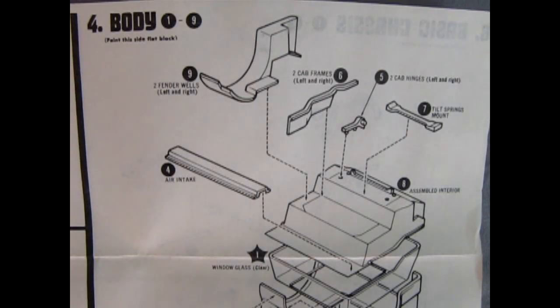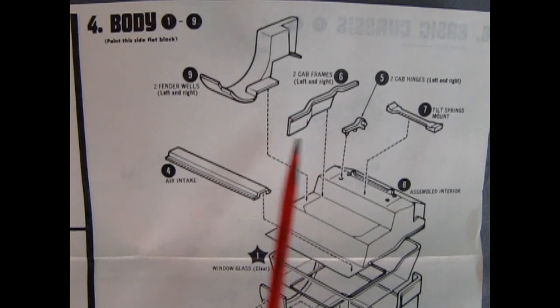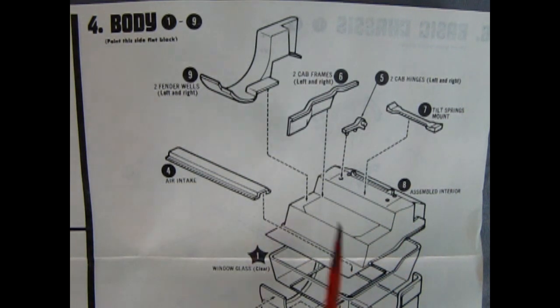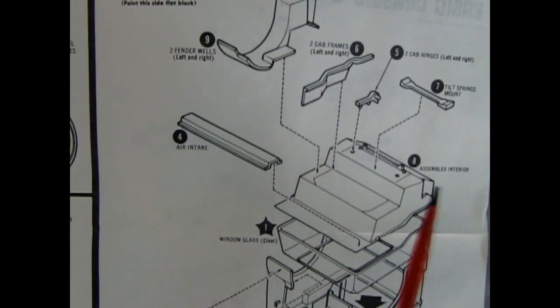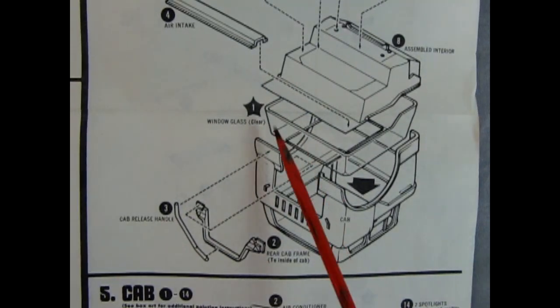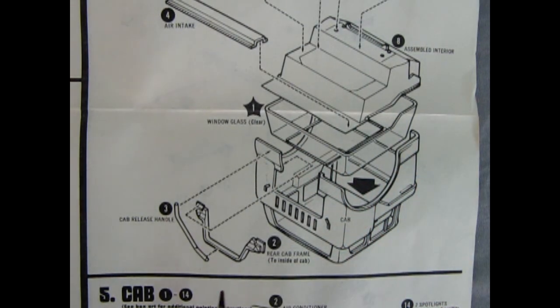Panel four shows our body construction with the two fender wells left and right. And then we have two cab frames, two cab hinges, the tilt mount spring, the assembled interior, our air intake, which glues on the bottom here. And then as we move this up a bit, we also have the clear window in front. And then our cab down below, the rear cab frame, and a cab release handle.